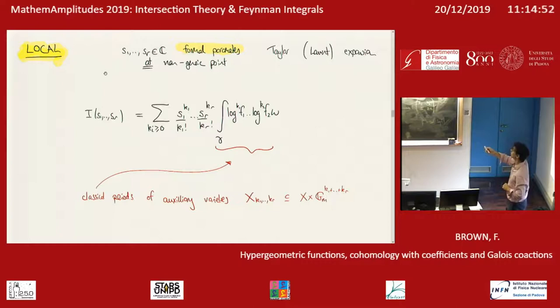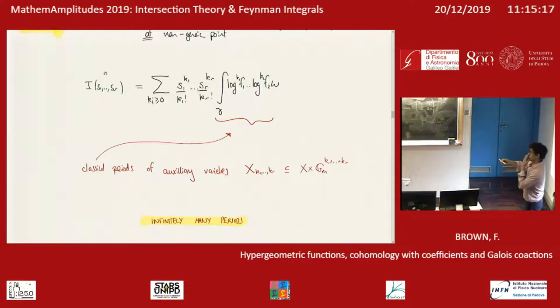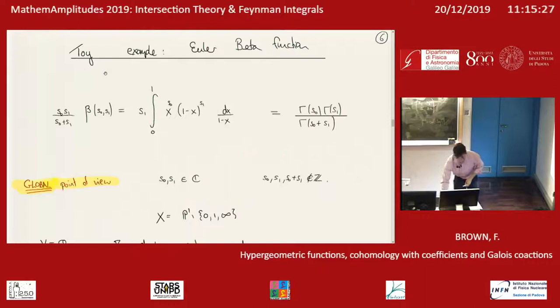We get a power series with certain values given by certain integrals. These integrals are, in fact, classical periods — they don't look like it, but they are. However, they are periods of a completely different variety — periods of some very different algebraic varieties which depend on the parameters. So in this local picture we're getting infinitely many periods, whereas in the global situation we had finite rank groups and finitely many periods. Here we get a Taylor expansion with infinitely many different numbers which are related to completely different geometry.